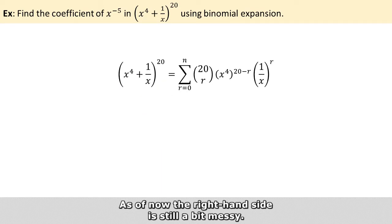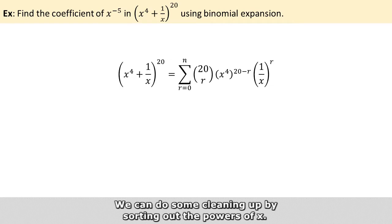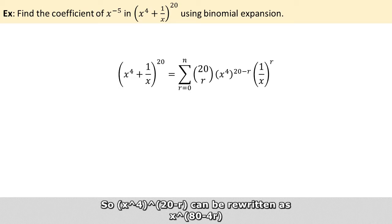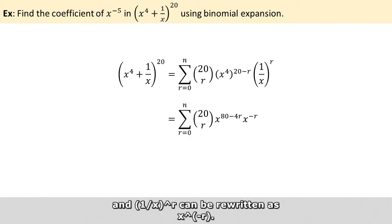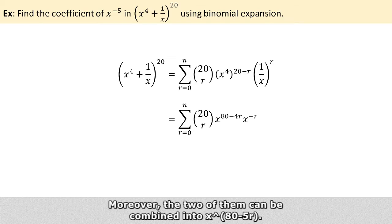As of now, the right-hand side is still a bit messy. We can do some cleaning up by sorting out the powers of x. So x raised to the power of 4 raised to the power of 20 minus r can be rewritten as x raised to the power of 80 minus 4r. And 1 over x raised to the power of r can be rewritten as x raised to the power of minus r. Moreover, the two of them can be combined into x raised to the power of 80 minus 5r.